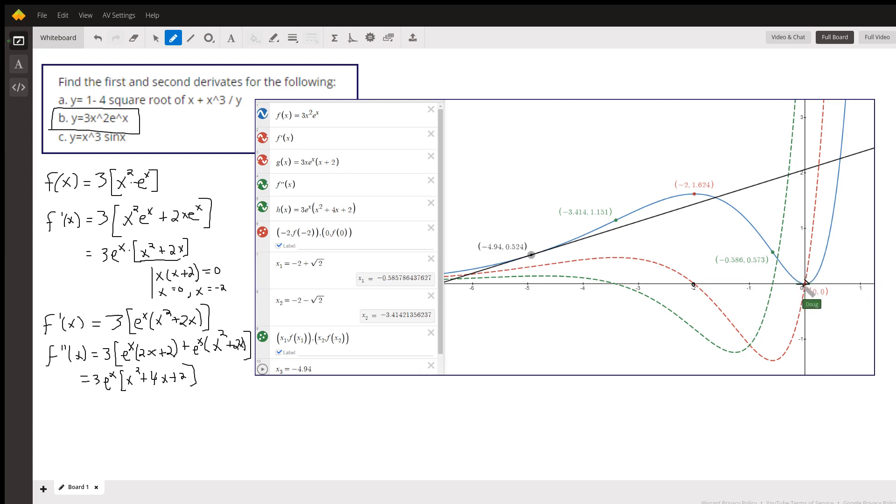And we get a relative minimum when x is zero. So let's move on to y double prime. I rewrite it like this, and then I'll take 3 times the derivative of the inside.